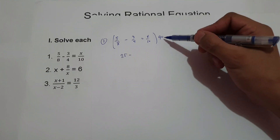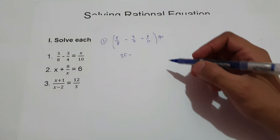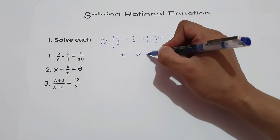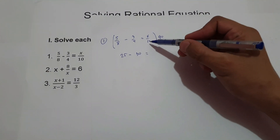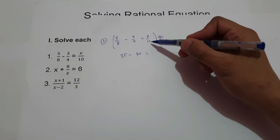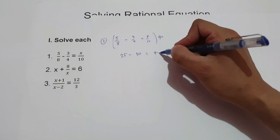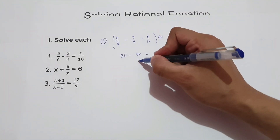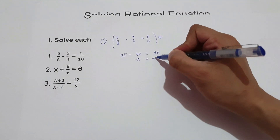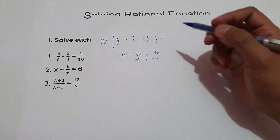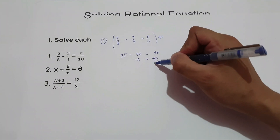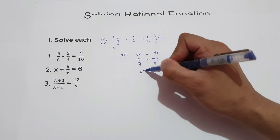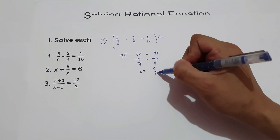Minus 40 divided by 4 is 10, times 3 is 30. Equals 40 divided by 10 is 4, times x is 4x. So 25 minus 30 is negative 5, equals 4x. To find the value of x, divide by 4 on the whole equation. So x is negative 5 over 4.